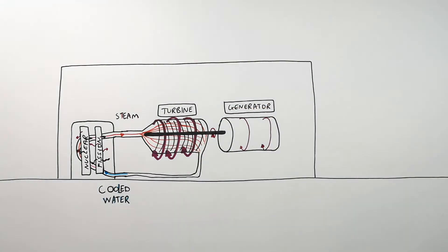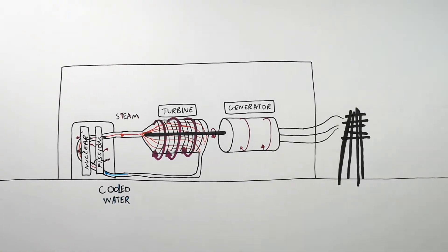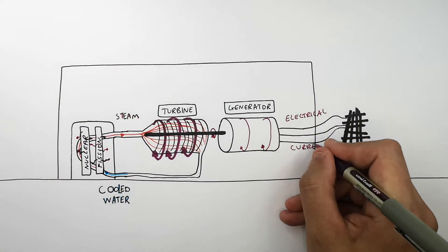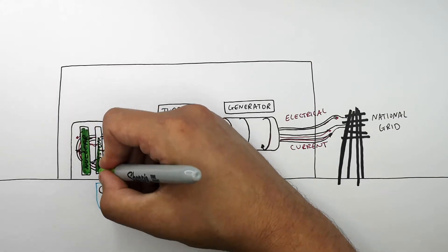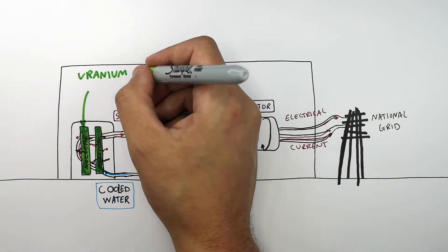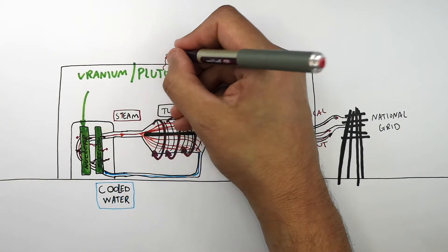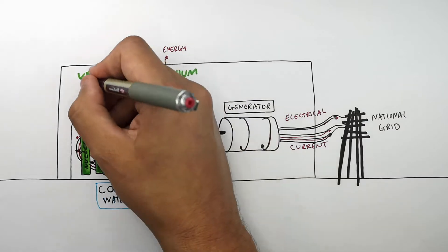The generator generates an electric current, which is then connected and supplies the national grid. Inside the nuclear fission reactor, it is uranium or plutonium that is used to transfer energy to the thermal energy stores of the water to convert it to steam.